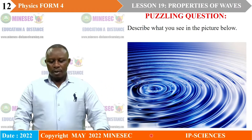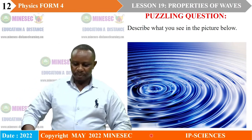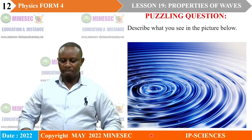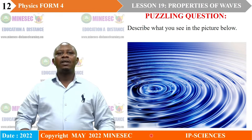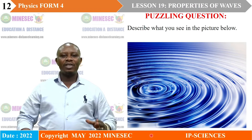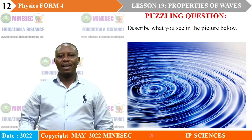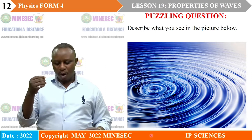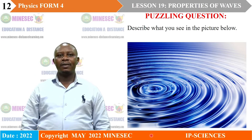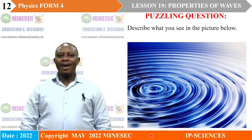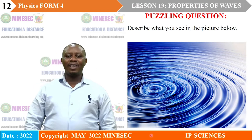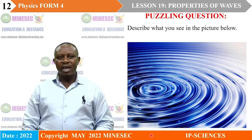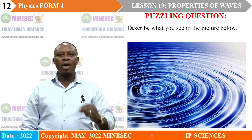Now look at the diagram you have on the screen. Describe what you see. It's a picture — what can you see? Can you tell me what causes what you find in the picture? Think about the answer and keep it to yourself. By the end of this lesson, I will be expecting that you should be able to describe what you see.